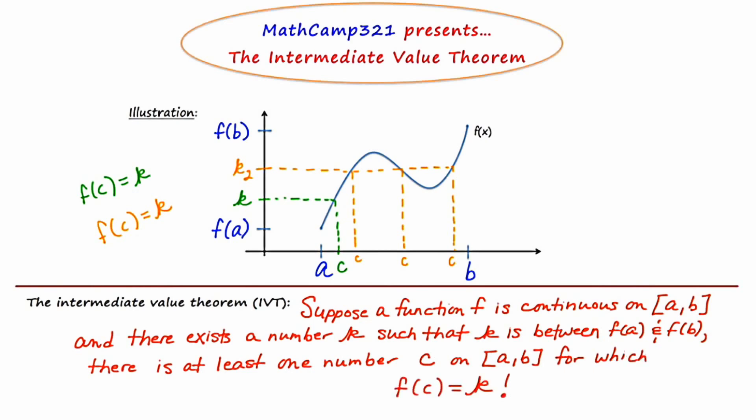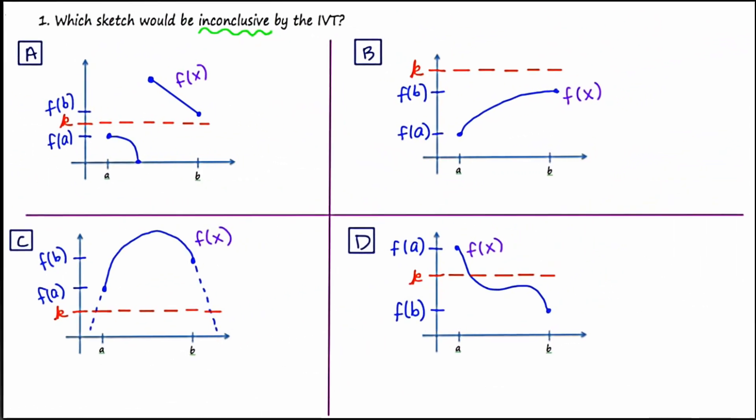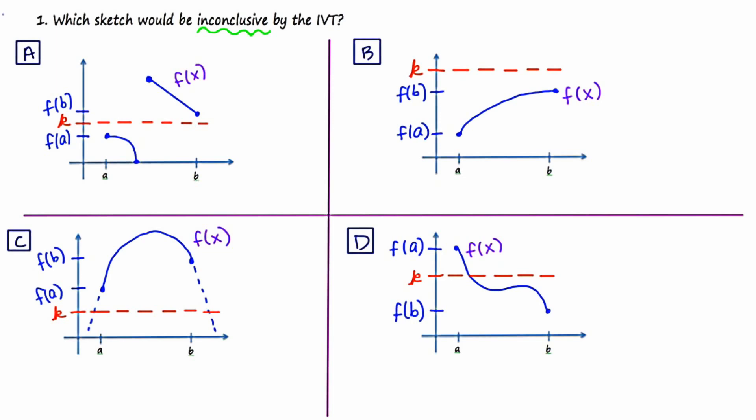Now I'm going to walk you through a few examples. In this question, they're asking which of the following sketches would be inconclusive by the Intermediate Value Theorem. To answer this, we have to look at each sketch and address the two conditions of the theorem. The first condition is: is the function continuous? Looking at graph a, we're given a piecewise function over an interval from a to b, and it's clear that this is not a continuous function. Because it's not continuous on that interval, the IVT does not apply. In graph b, the function f appears to be continuous on a,b — there are no asymptotes, holes, or gaps. So the next thing we have to check is whether the k value they give us is in between f of a and f of b. If we look at the k in red, it is not in between f of a and f of b. Therefore, the IVT again does not apply.